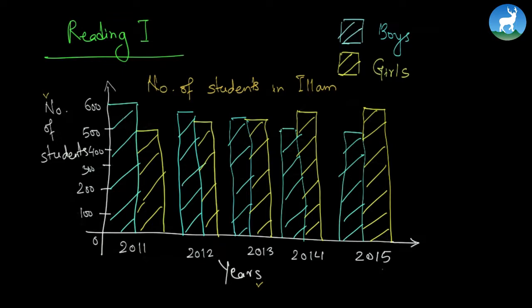The year goes on increasing from 2011 to 2012 up to 2015, while the number of students starts from 100 and ends up to 600. The first bar represents the number of boys while the second one represents the number of girls, as given in the index.